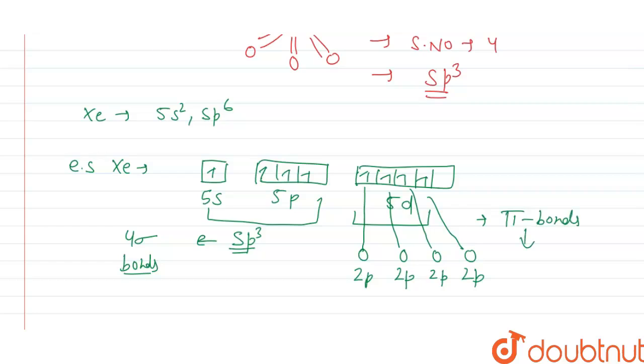Now, the nature of these pi bonds is determined by the orbital overlap. Here, the 2p orbital of oxygen and 5d orbital of xenon overlap. So these pi bonds are called p pi-d pi bonds.